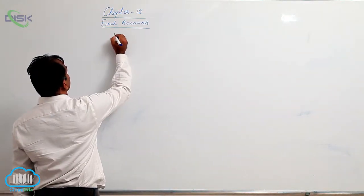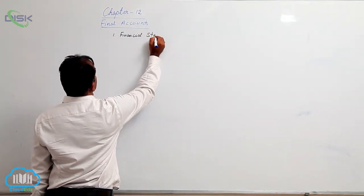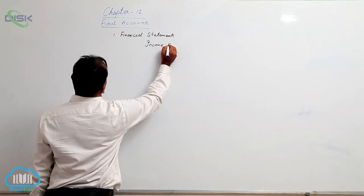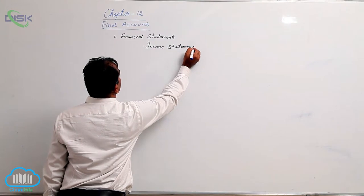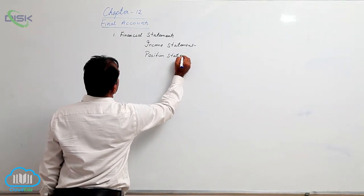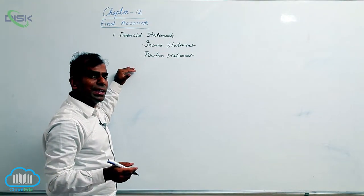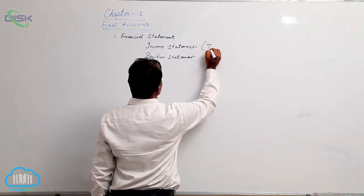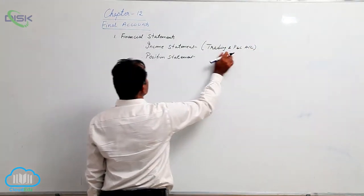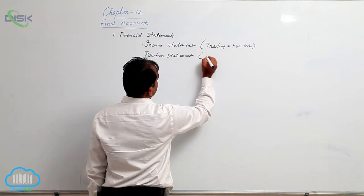Final accounts consists of preparation of financial statements. The financial statements are the income statement and the position statement. These are the modern names given to what we traditionally call the trading and P&L account and the balance sheet respectively. The income statement is traditionally called the trading and P&L account, and the position statement is traditionally called the balance sheet.